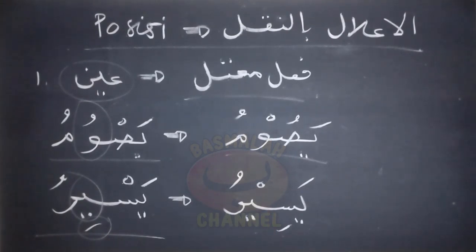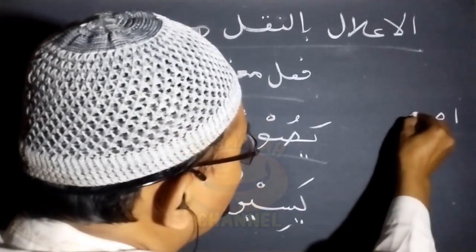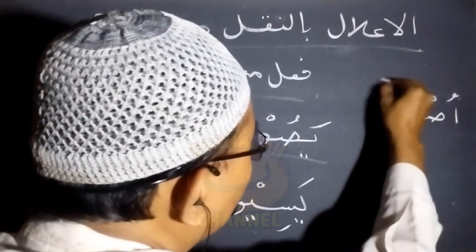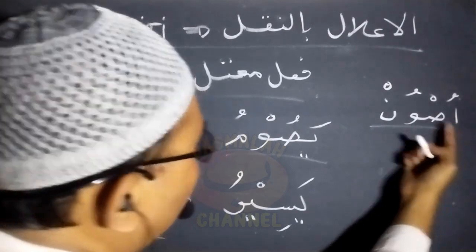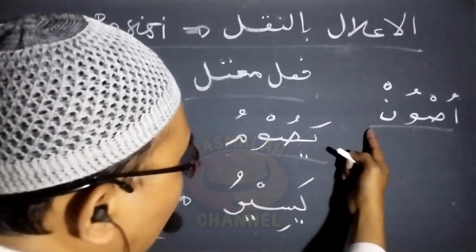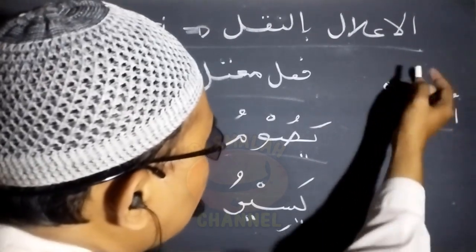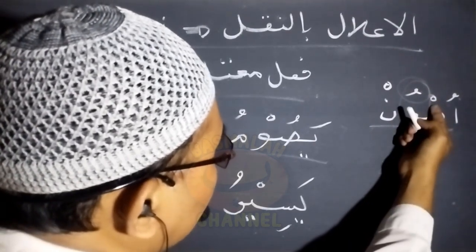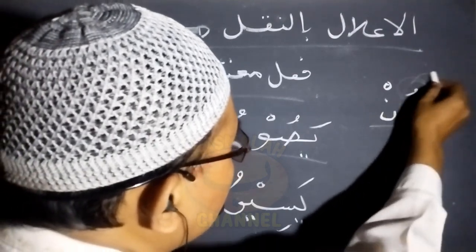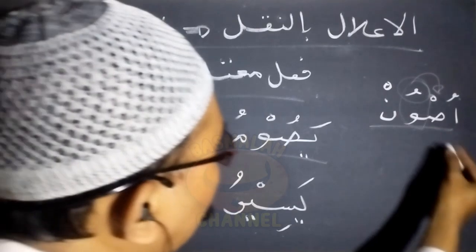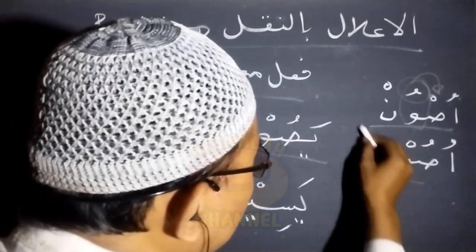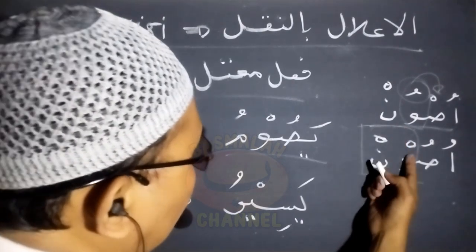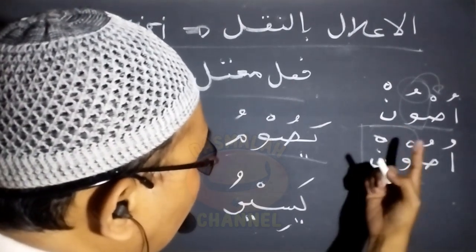Hal ini tidak hanya terjadi pada bentuk fi'il mudore-nya. Berbentuk fi'il amar pun juga bisa terjadi, seperti lafad us'un. Us'un adalah merupakan bentuk fi'il amar dari lafad sona yasunu, mengikuti wazan uf'ol. Pada lafad us'un yang berupa fi'il amar ini, ain fi'ilnya berupa huruf ilat yang berharkat, sementara huruf sebelumnya adalah huruf yang sohe dalam keadaan sukun. Maka supaya bacaannya menjadi ringan, harus dilakukan penukaran harkat, sehingga us'un akan berubah, maka terjadilah bertemunya dua huruf yang sukun.